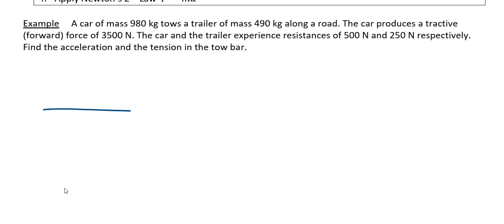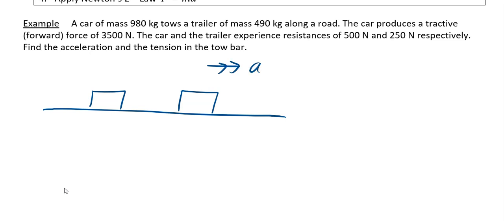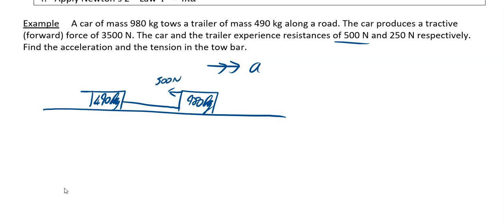For a simple diagram, draw a horizontal line for the road with the car moving left to right. The mass of the car is 980 kg. There is no need to mark the weight — it is only horizontal motion we are looking at. The mass of the trailer is 490 kg, connected to the car via a tow bar. The resistance from the car is 500 newtons and the resistance from the trailer is 250 newtons.